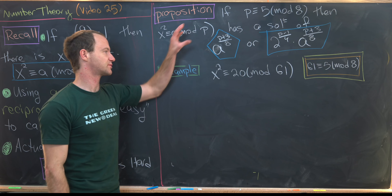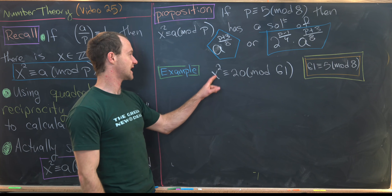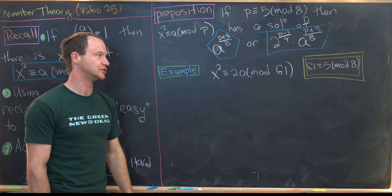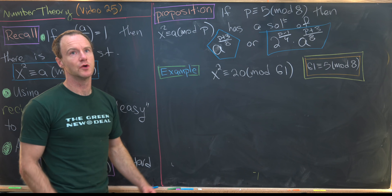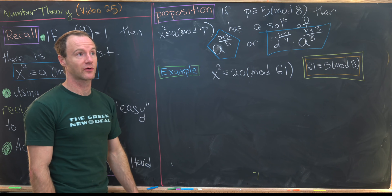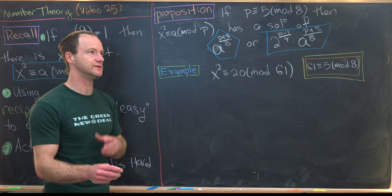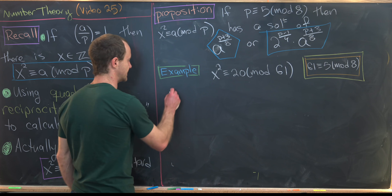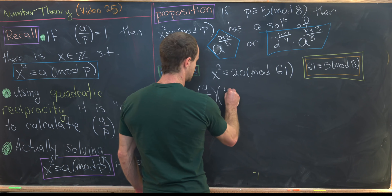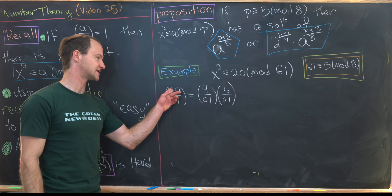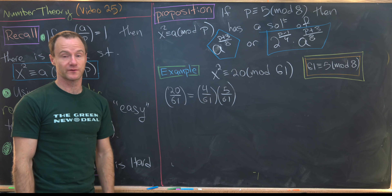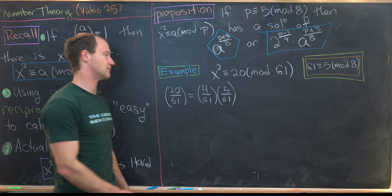Now let's look at an example of this proposition in action. We'll solve x² ≡ 20 mod 61. Notice that 61 ≡ 5 mod 8, since it's 3 less than 64, i.e., ≡ −3 ≡ 5 mod 8. We'll calculate the Legendre symbol using quadratic reciprocity. We have (20/61) = (4/61) × (5/61). Since 4 is a perfect square, (4/61) = 1.